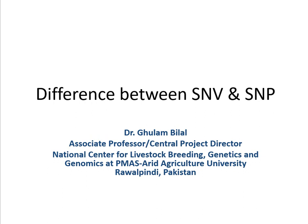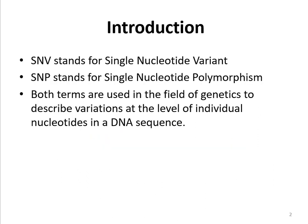In this video we will talk about the difference between SNV and SNP in terms of genetics. SNV stands for Single Nucleotide Variant, while SNP stands for Single Nucleotide Polymorphism. Both terms are used in the field of genetics to describe variation at the level of individual nucleotides in a DNA sequence.